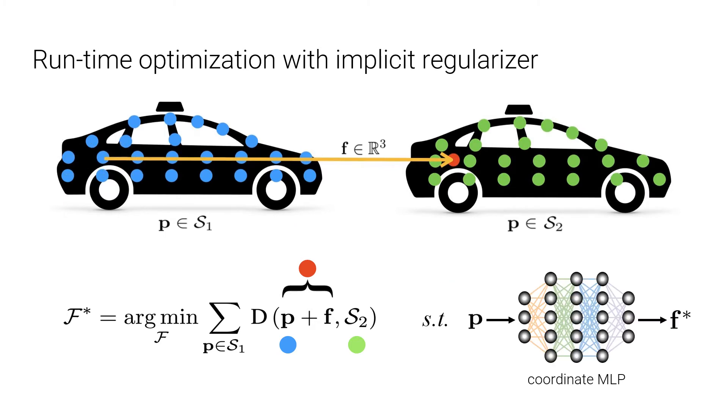Instead, we propose to use a neural scene flow prior. Specifically, we use the architecture of a coordinate MLP as a new type of implicit regularizer. In our formulation, the explicit scene flow F is replaced by an implicit coordinate network G, parameterized by theta.